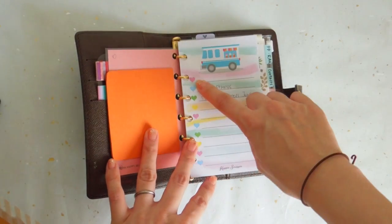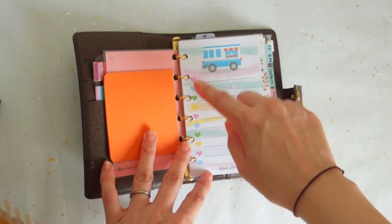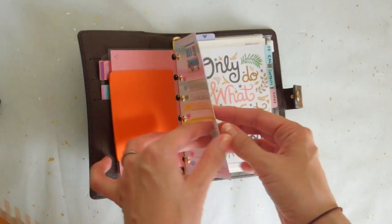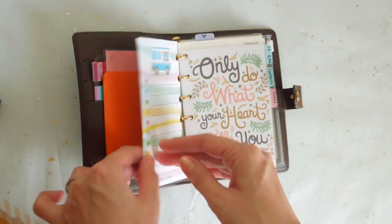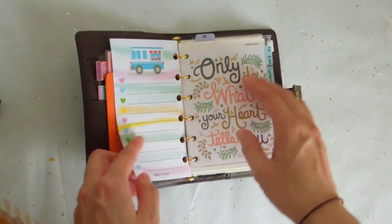So I use this as my to-do's. I use the hearts as my checkbox, and it's so cute because they're also double-sided, so it's really nice to use. So I have that for my to-do list.